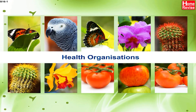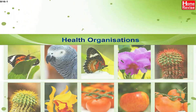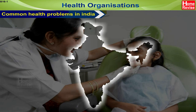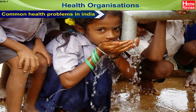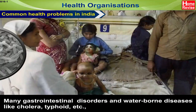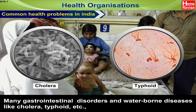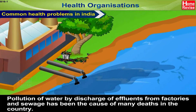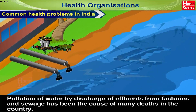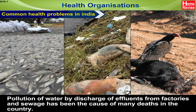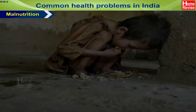Common health problems in India: unsafe drinking water. Many gastrointestinal disorders and waterborne diseases like cholera and typhoid are due to lack of safe drinking water. Pollution of water by discharge of effluents from factories and sewage has been the cause of many deaths in the country.